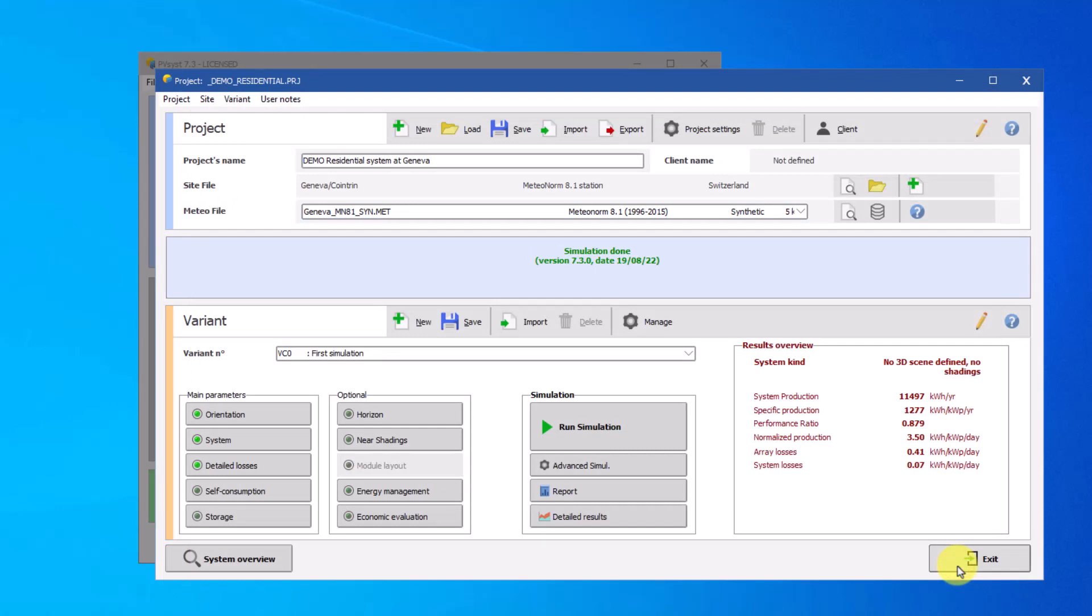Then in the Variant tab, choose the variant VC2 Detailed Losses. The degradation of the PV module is considered as a system loss. You can define the degradation parameters in the Detailed Losses – Aging dialog. Click on the button Detailed Losses – Aging.